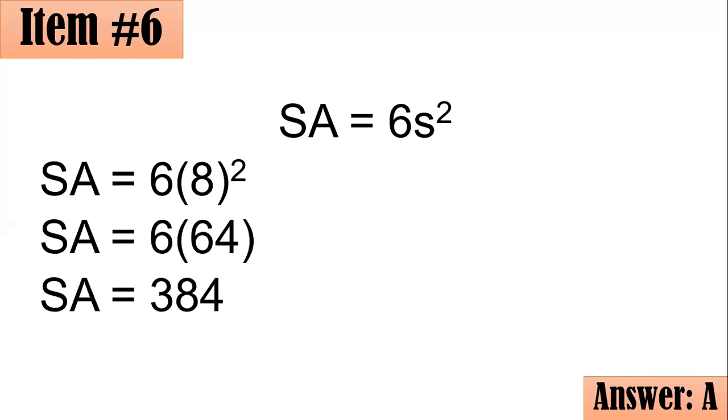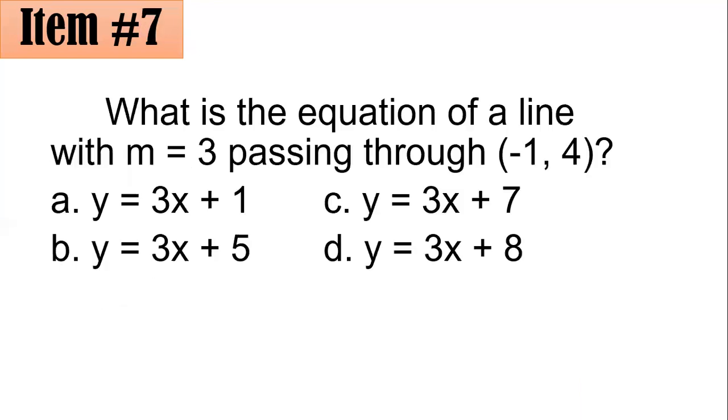Number 7. What is the equation of a line with M equals 3 passing through negative 1, 4? Is it A, B, C, or D? What do you think?